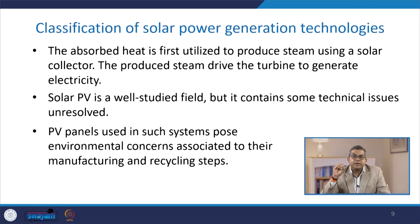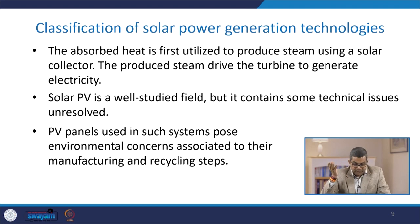Solar photovoltaic is a well-studied field, but it contains some unresolved technical issues. The photovoltaic panels used in such systems pose environmental concerns associated with their manufacturing and recycling steps. Second, it does not generate power reliably, as it is directly related to the intensity of incoming sun rays and angle of incidence. Both change throughout the day, leading to instability in the grid. In the morning, the intensity of solar radiation may be on the lower side, then peak during the middle of the day, and gradually go down during the evening. Similarly, because the sun moves in different directions, it creates a lot of instability.